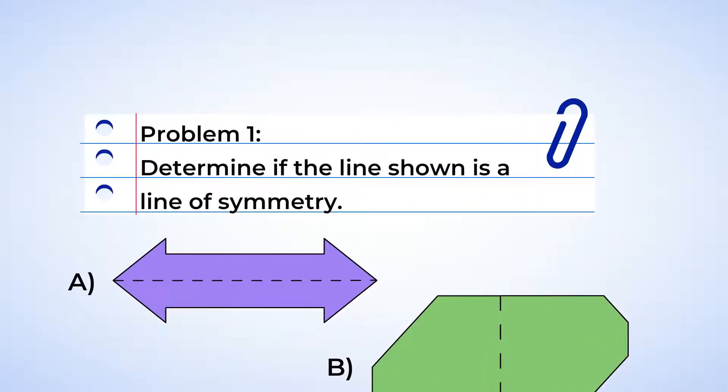Looking at shape A, we can look at the top and bottom of the shape and see that they are the same. It's a reflection. And so the dotted line is a line of symmetry. Good.